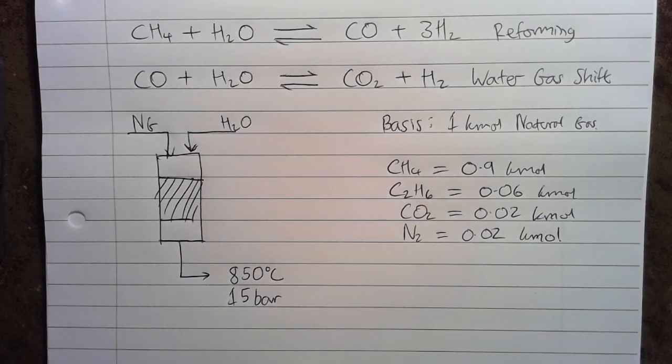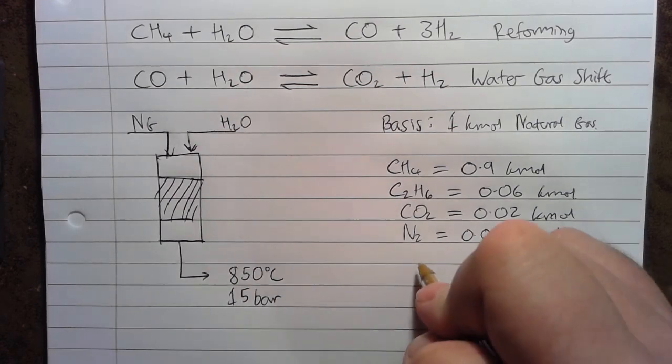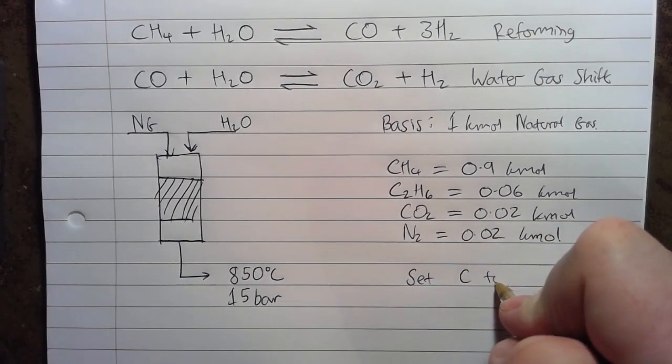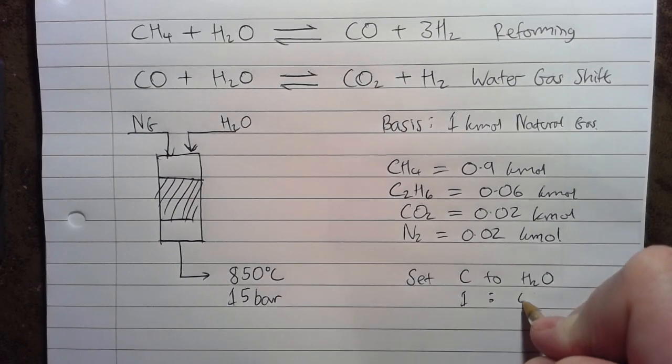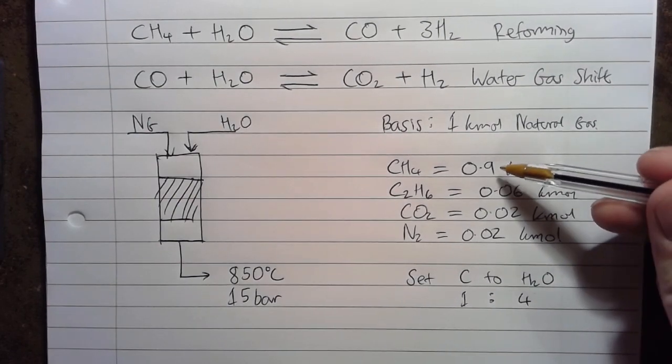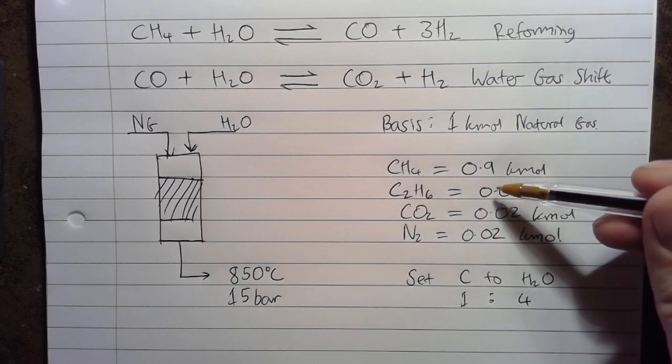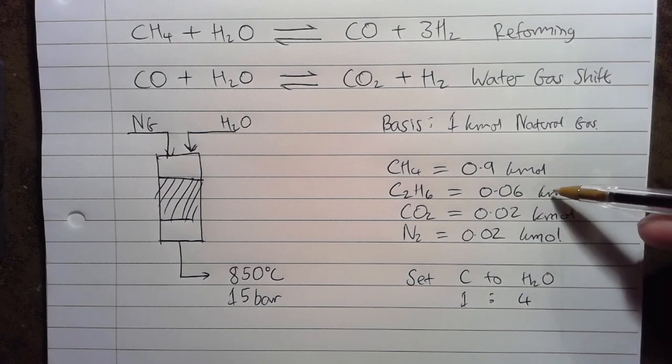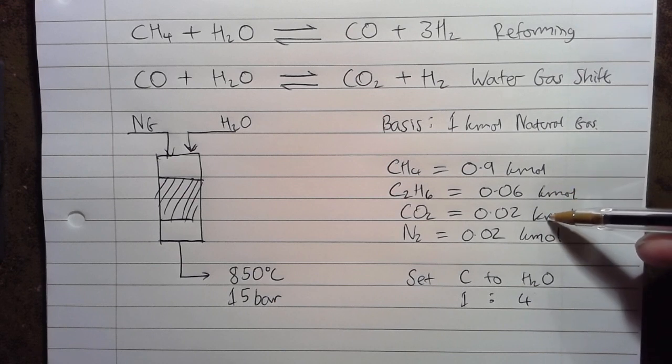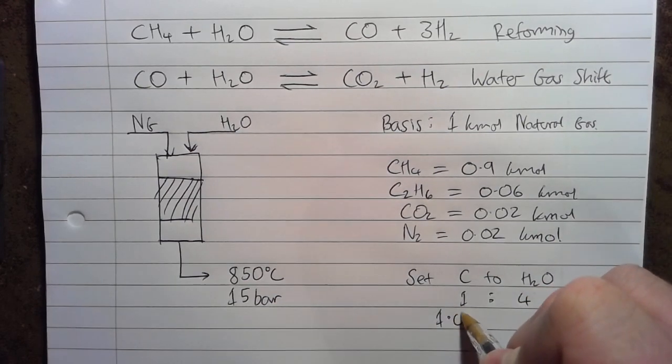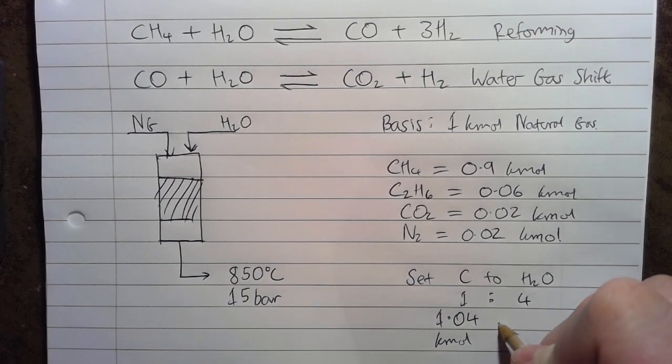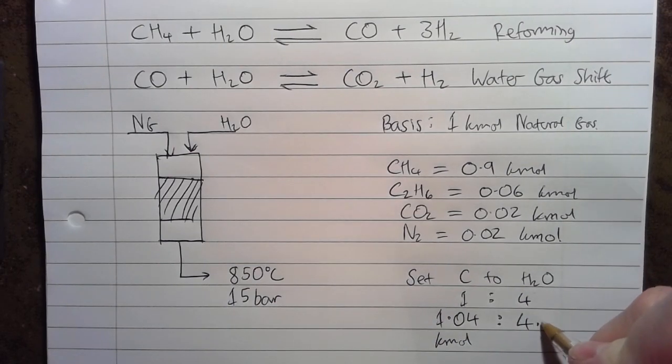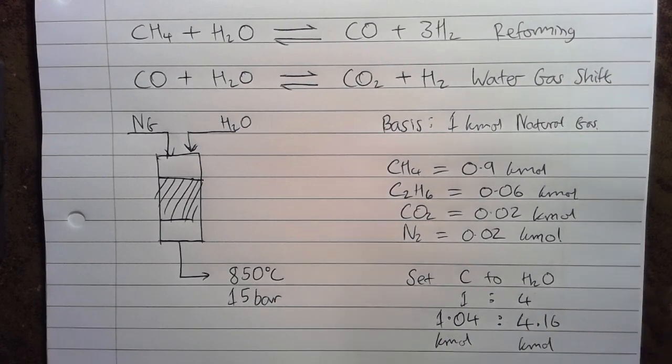The question also tells us to set the ratio of carbon in the feed to H2O as 1 to 4. Now, the total carbon in the feed is 0.9 kmol from the methane, 2 lots of 0.06, so that's 0.12 moles of carbon from the ethane, and 0.02 kmol of carbon from the CO2. So, we actually have 1.04 kmol of carbon in the feed, so that means that we need 4.16, so 4 times that for the steam coming in.